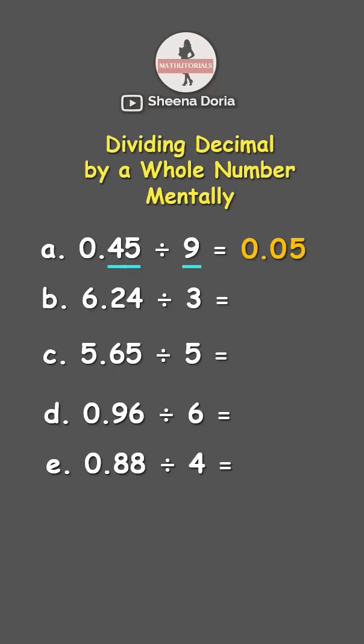Next, we have 6.24 divided by 3. Let's have 6 divided by 3, which is 2. Put the decimal point right there. Next, we have 2 divided by 3, which cannot be done since 2 is smaller, so that's 0.